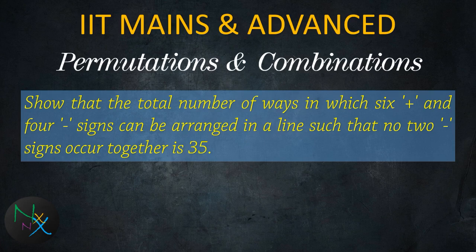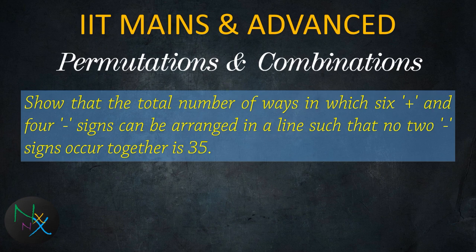The question is, show that the total number of ways in which 6 positive signs and 4 negative signs can be arranged in a line such that no two negative signs occur together is 35.